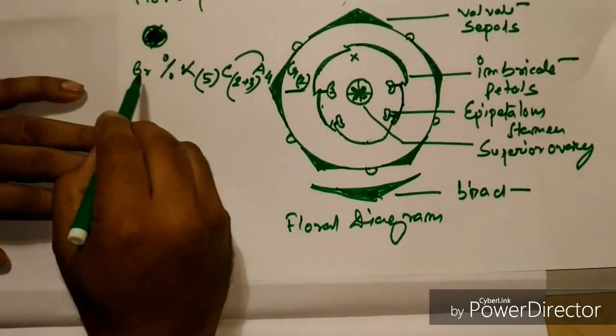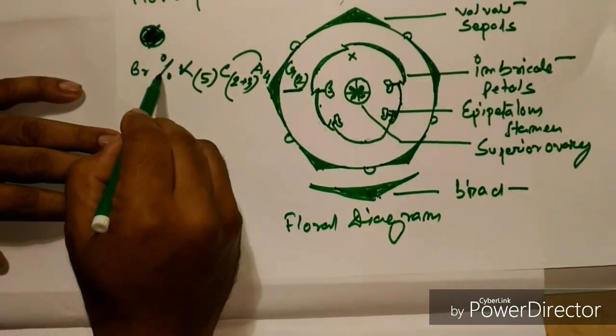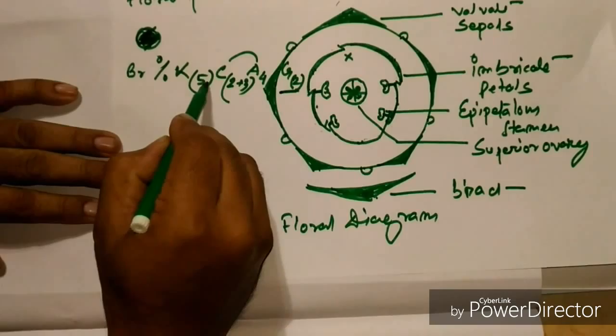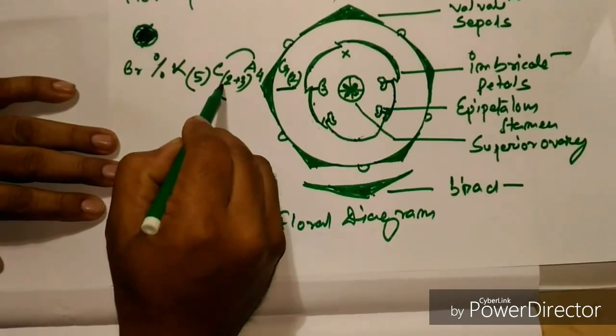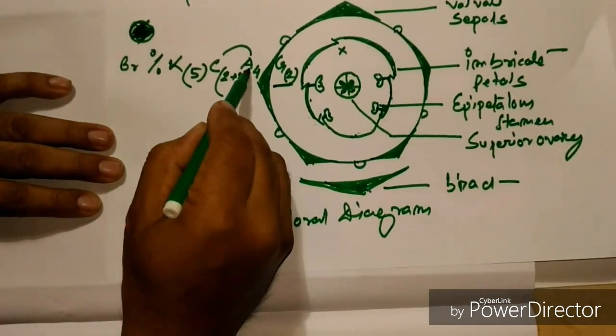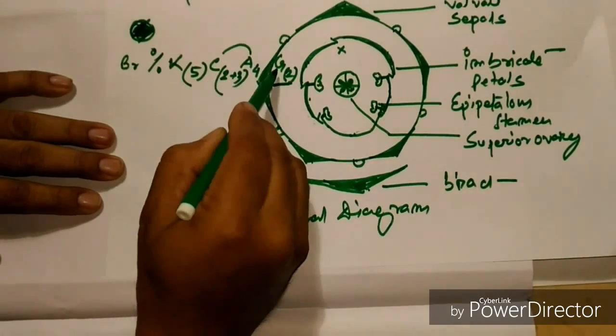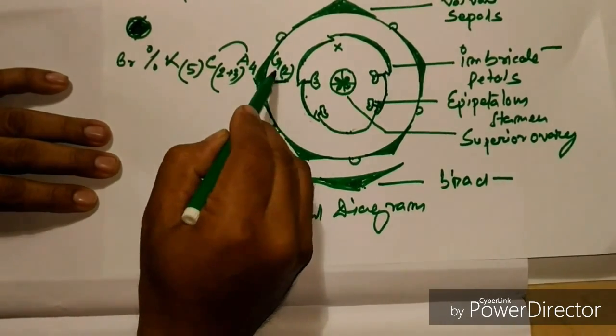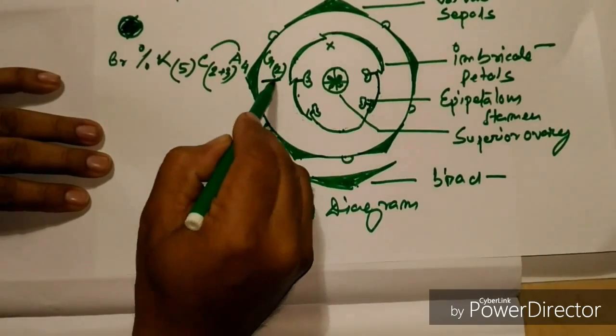Hence it will be like this: BR, zygomorphic, K5 united, C5 two plus three united, androecium four epipetalous, and gynoecium two united, ovary superior, hence G will be underlined.